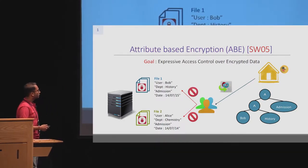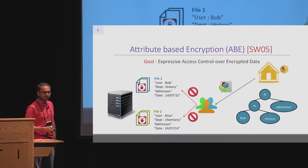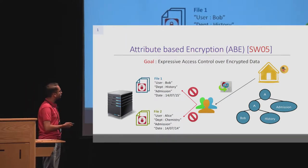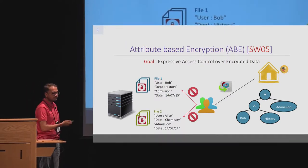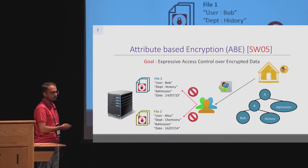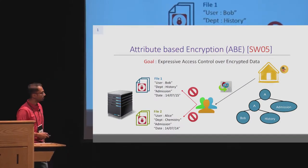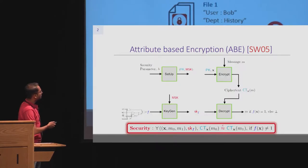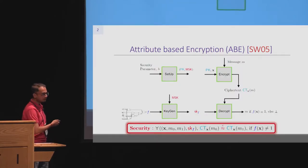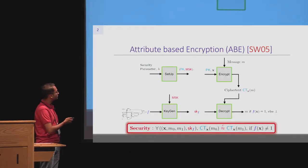Further, we want to ensure that any set of colluding users should not be able to decrypt any of these files as long as at least one of these users is not individually authorized to decrypt them. This is formalized by four algorithms: setup, encrypt, keygen, and decrypt.